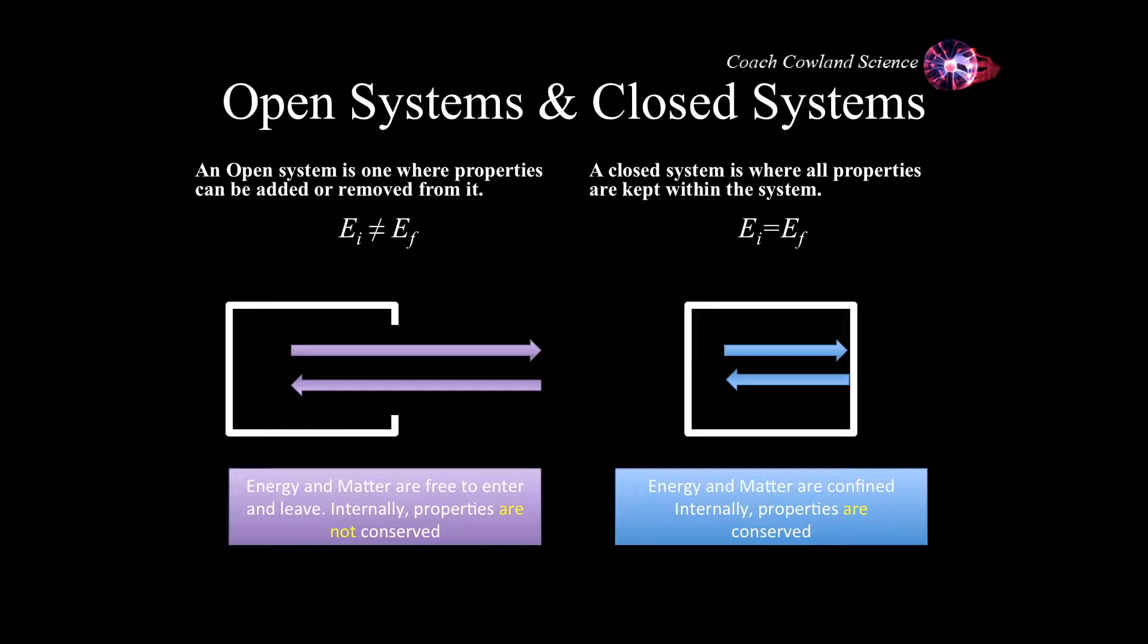So within closed systems we can calculate what's going on by working out, if we know what's happening to one thing, we can work out what's happening to the other thing. Just like in a mathematical equation, the left side of an equation is equal to the right side. Well if the left side is the past and the right side is the future, then you know what happened in the past has to be the same as what happens in the future. That's basically conservation in closed systems.